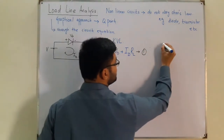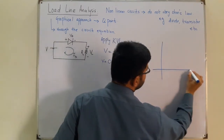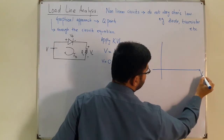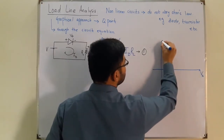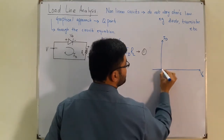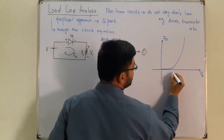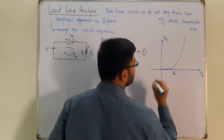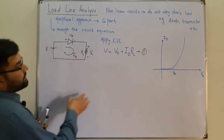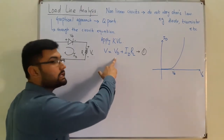Now let's draw the forward bias characteristics of the diode. The x-axis is the voltage across the diode VD, the y-axis is the current through the diode ID, and the curve starts rising after the barrier potential VB.